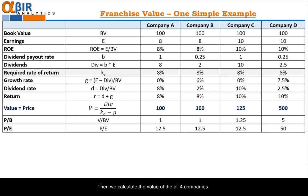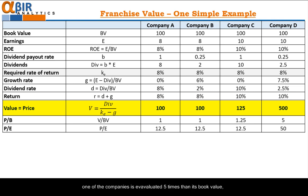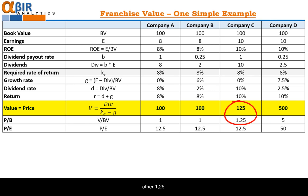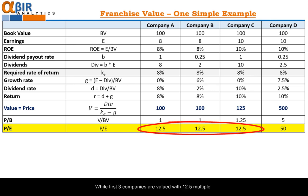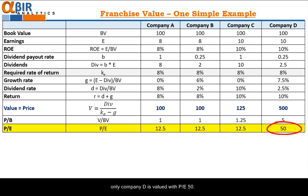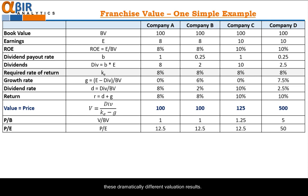We calculate the value of these four companies and assume that the price will be equal to the value. What we see is a huge difference in value. One of the companies is evaluated at five times its book value, another at 1.25, and the other two at only one. When we look at the resultant price-to-earnings, while the first three companies are valued at a 12.5 multiple, only company D is valued at a price-to-earnings of 50.